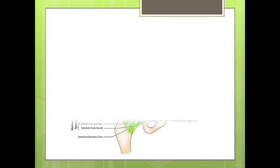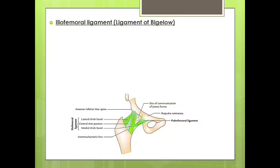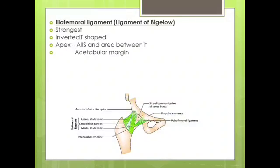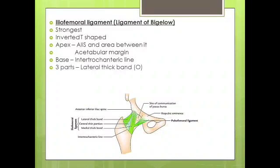Moving on to the next ligament — the iliofemoral ligament, also called the ligament of Bigelow. It is the strongest ligament of the body and prevents the trunk from falling backward in standing posture. It is an inverted Y-shaped ligament with its apex attached to the lower half of anterior inferior iliac spine and the area between it and the acetabular margin. Its base is attached to the intertrochanteric line. The iliofemoral ligament has three parts: a lateral thick band of oblique fibers, a middle thick band of vertical fibers, and a central thin portion.